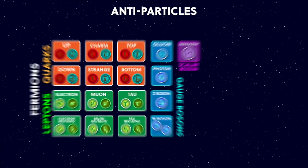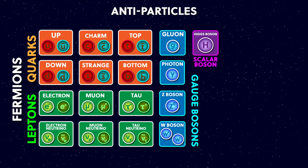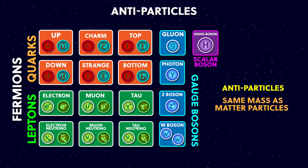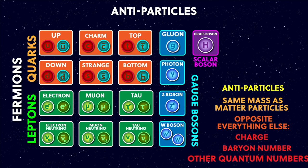I haven't talked about antiparticles yet, so let's do that now. Here's a version of the standard model with all of the antiparticles drawn as well as the particles. As you can see, all of the fermions have got antiparticle partners, which have got the same mass as the regular particles, but have got an opposite everything else, like charge or baryon number and other kinds of quantum numbers.